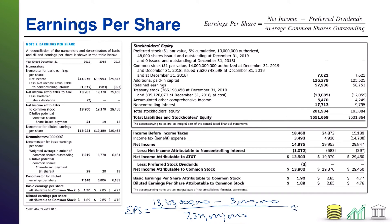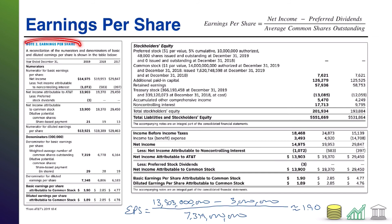AT&T has done the entire earnings per share calculation for us, and many companies will. But we still need to learn it and go through the motions of how to pull the information in case we need to calculate it ourselves. We've got our net income, figured out our preferred dividends, and the company calculated the common shares outstanding for us. Do that math, and we get approximately $1.90 earnings per share. If you look at AT&T's calculations at the bottom of the income statement, and also in the notes for earnings per share, they calculated $1.90 as well.